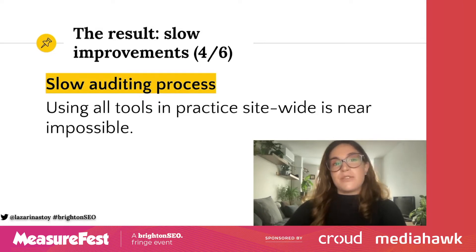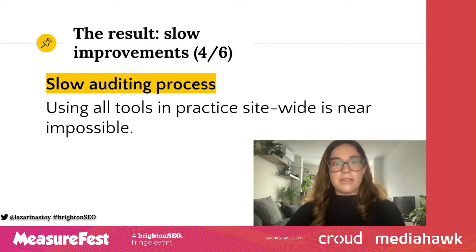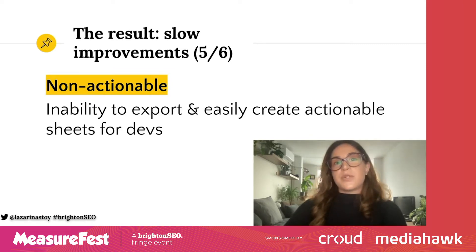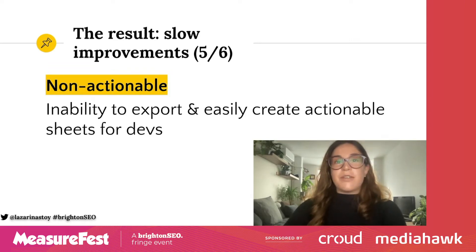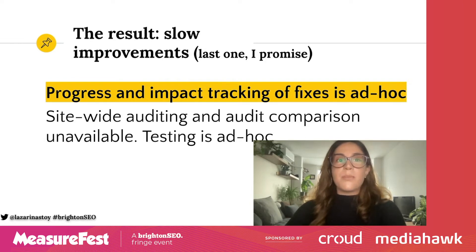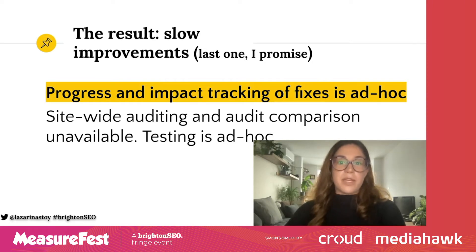So what this will result in is a very slow auditing process. Even though web dev advises us to use all tools, implementing this in practice is near impossible. Your recommendations will also likely be non-actionable because you will struggle to export and easily create actionable sheets for devs, or you'll spend a lot of time doing it. The lack of interactivity in many of the tools means exporting dev sheets with the specific URLs that contain issues can be a big pain. Progress and impact tracking of fixes is done ad hoc, and site-wide auditing and audit comparison is unavailable for most tools.